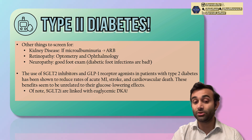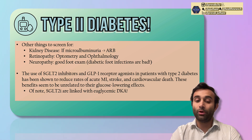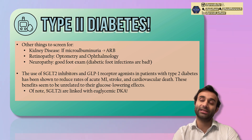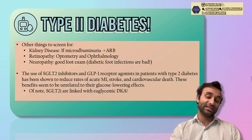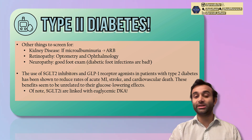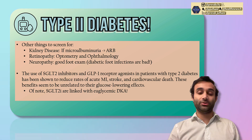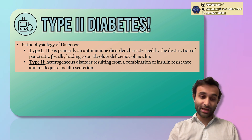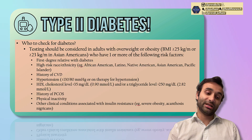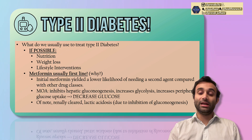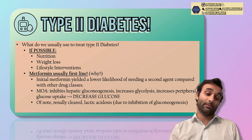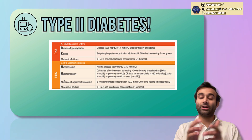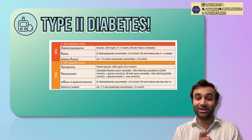One thing to remember with SGLT-2 inhibitors is that they increase the risk of euglycemic DKA — this means your glucose levels will actually be normal, but you'll still be in DKA, which can be really scary. So hopefully you enjoyed this video. We went over a lot of information today: specifically the pathophysiology of diabetes, who should be tested for it, how to diagnostically determine it, how to treat it, and how to be aware of emergencies in diabetics. Please drop a like, comment, share, and subscribe. Thanks for watching.